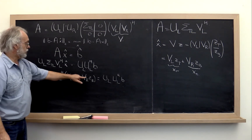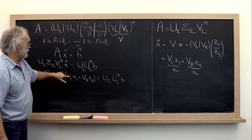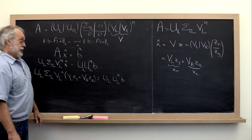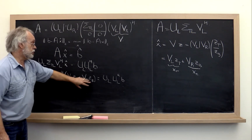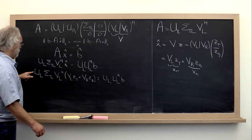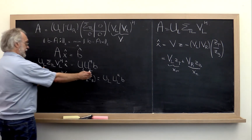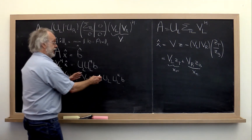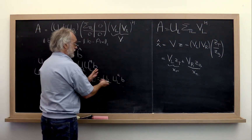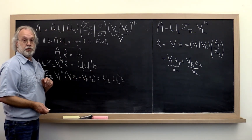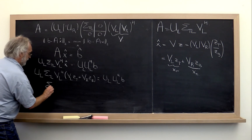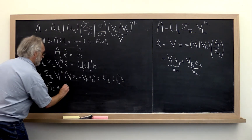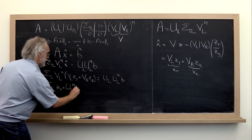Distributing across the two terms: VL Hermitian times VL is just the identity, and VL Hermitian times VR is just the zero vector, so that term disappears. We notice that UL appears on both sides — it tells you how to take linear combinations of columns of UL. Therefore we conclude that sigma top-left times z-top must equal UL Hermitian times B.